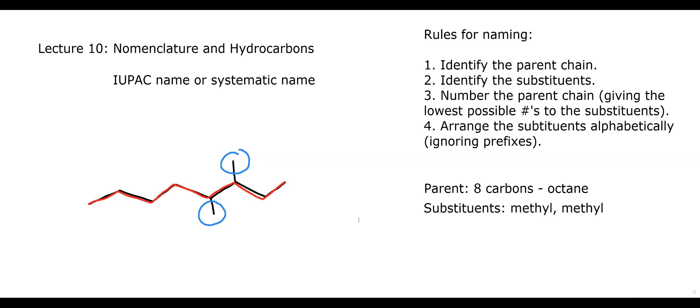Now we number the parent chain to give the lowest possible numbers to the substituents. We shouldn't number from the left, which would place substituents on carbons 5 and 6. Instead, numbering from the right places them on carbons 3 and 4, which gives lower numbers. So our substituents are 3-methyl and 4-methyl.